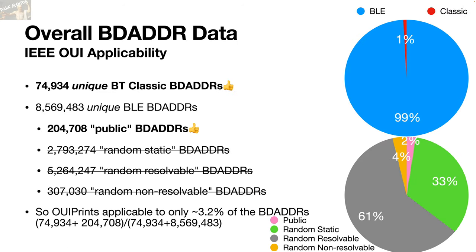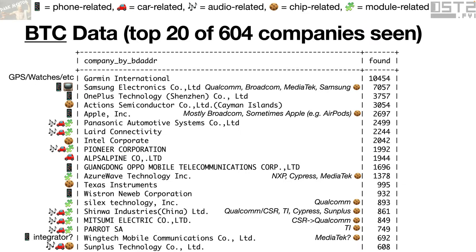If we're trying to do a toothprint based on BD Adders, we really want those BD Adders that include an IEEE OUI — that was Bluetooth Classic and BLE Public. Classic is a tiny subset of this data, and Public is a small sliver of the 99% BLE. The ultimate math is that in my particular data, only about 3.2% of the overall BD Adders have an OUI. But let's talk about what the OUIs show us and how they can be interesting.